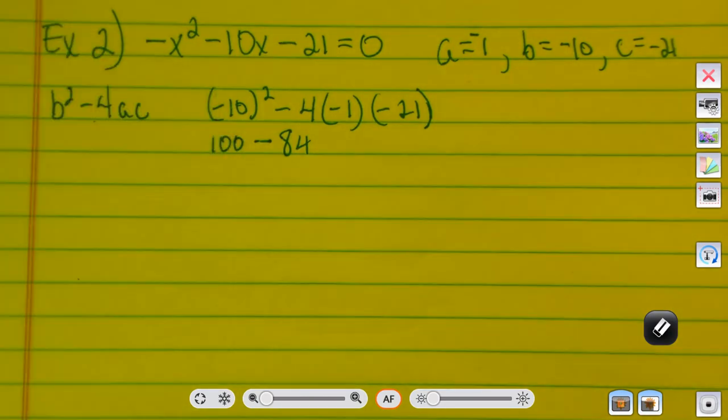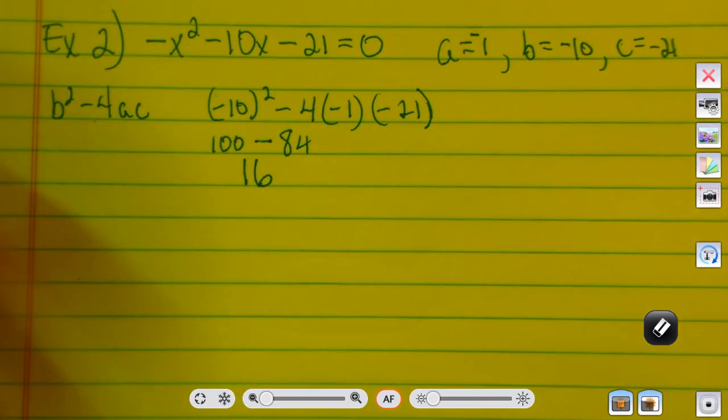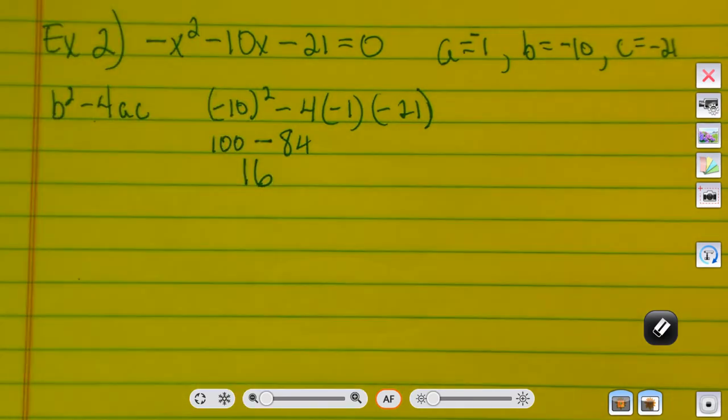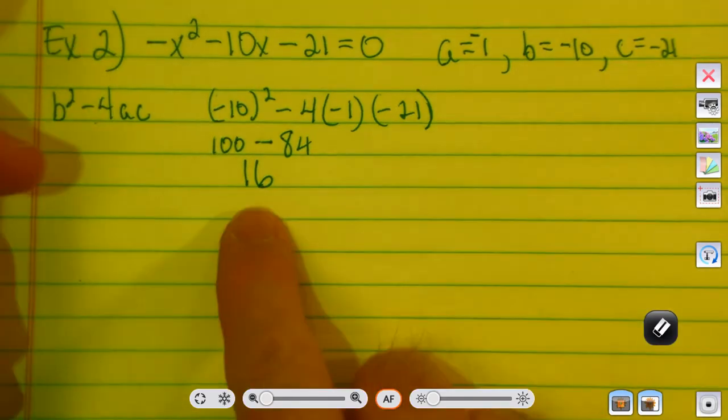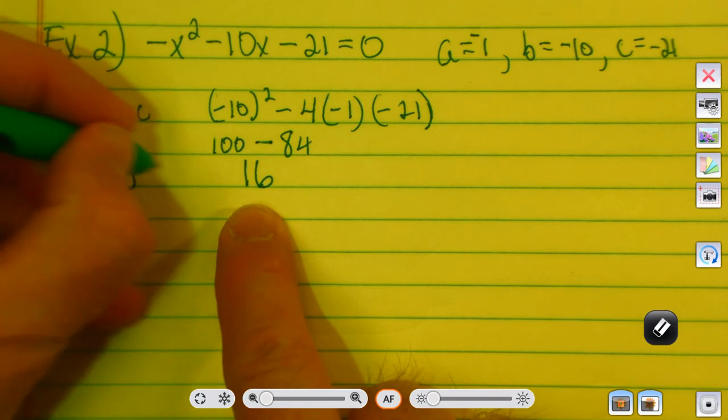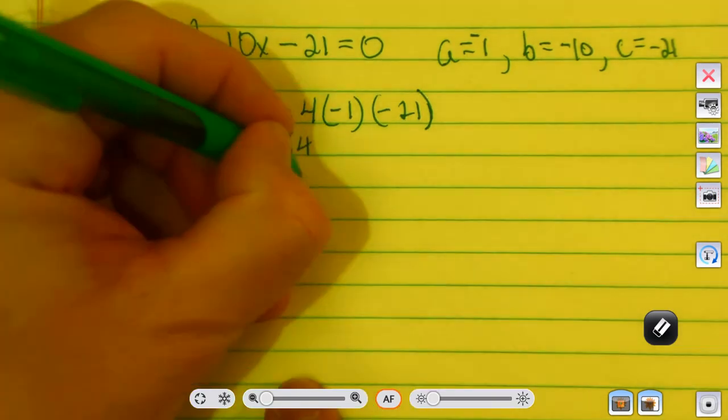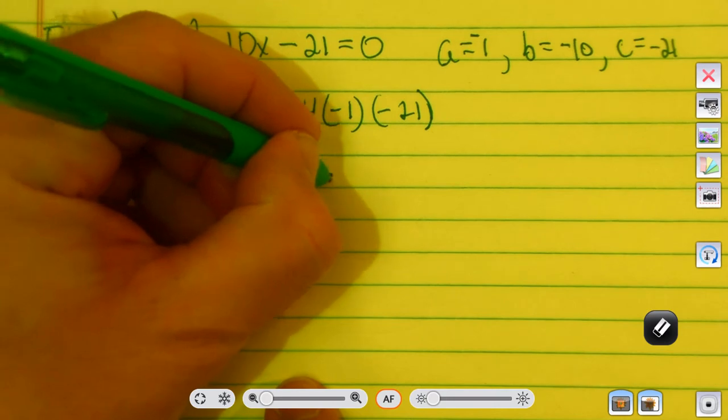Then, 100 minus 84 will be positive 16. So, how many solutions are there? Two. Two. Why? Yeah, because it's a positive 16. The discriminant here, b squared minus 4ac was equal to 16. So, there's two real solutions.